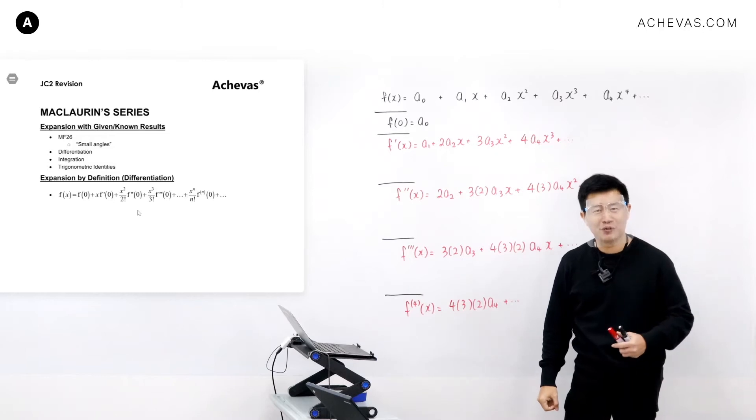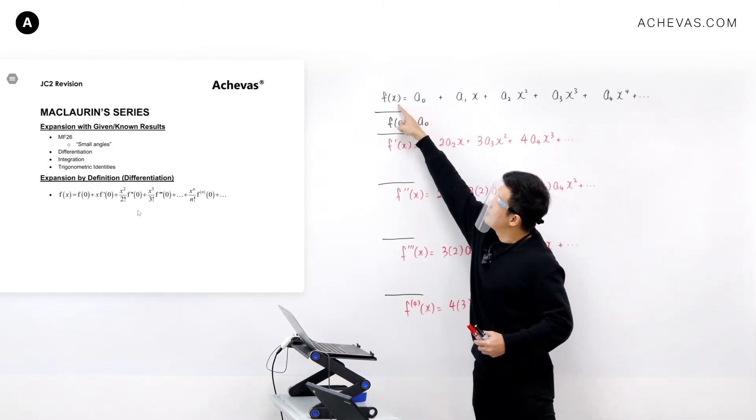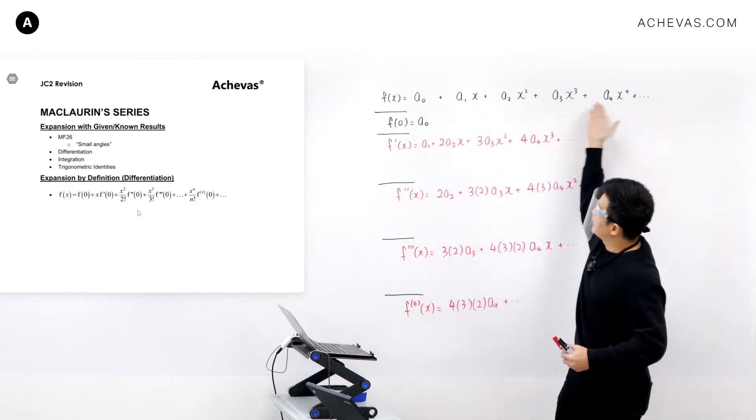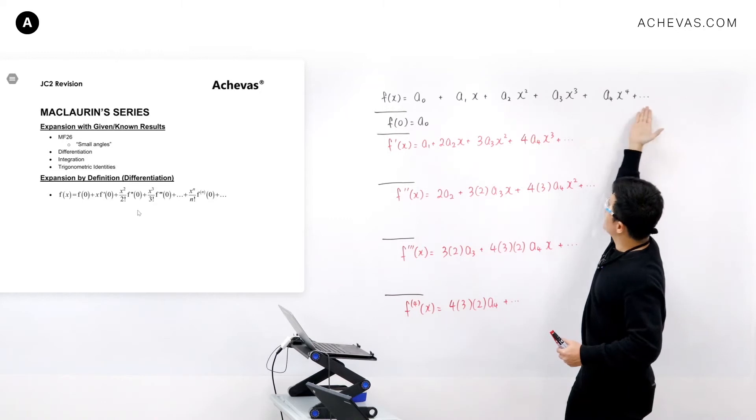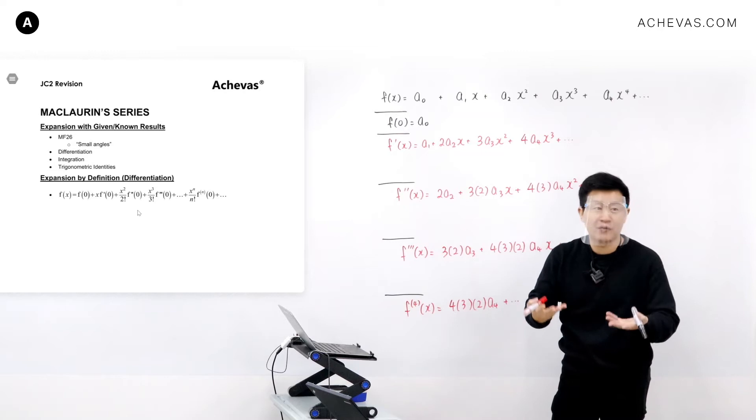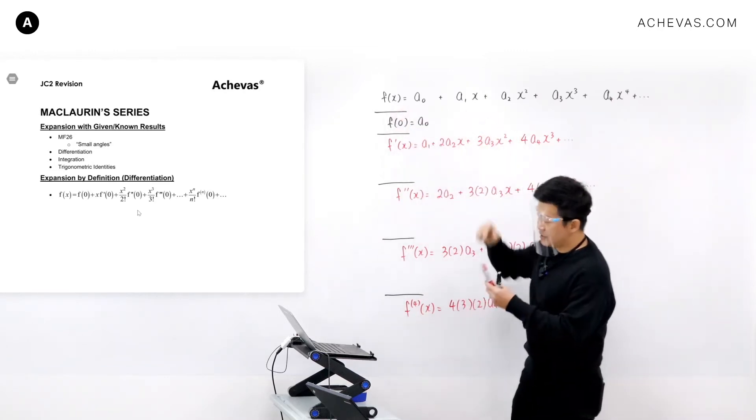I think Brian, you were the first one who told me how to find a0. I just simply let x be equal to 0. Because if I were to let x equal 0, looking at the form on the right-hand side, all these terms will become 0. So a0 will become f(0).